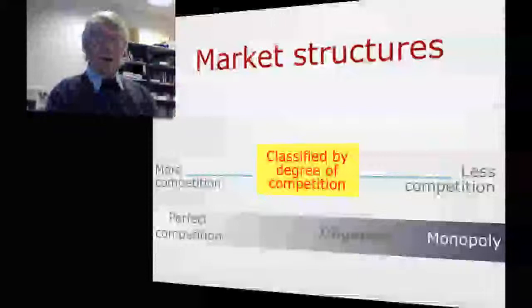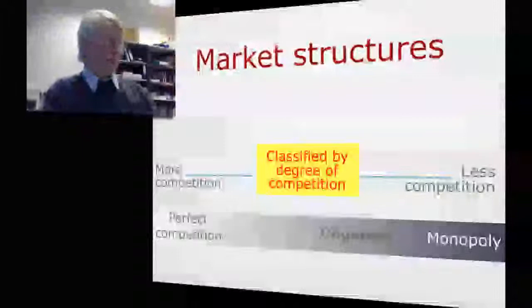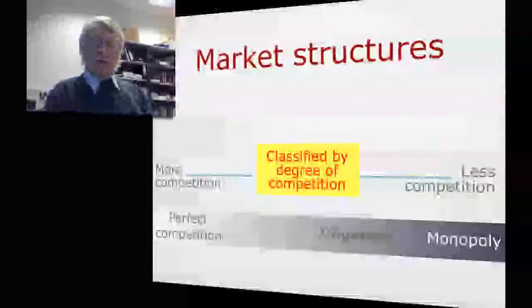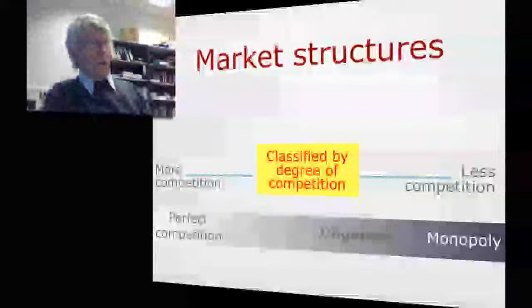In most textbooks the description of market structure moves from perfect competition through something that's called imperfect competition or possibly monopolistic competition, then oligopoly and finally monopoly.